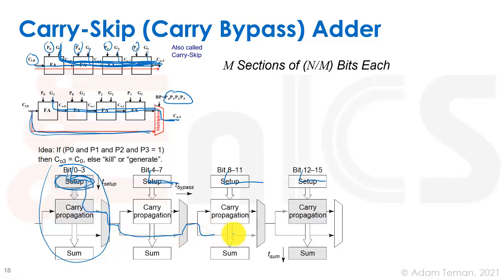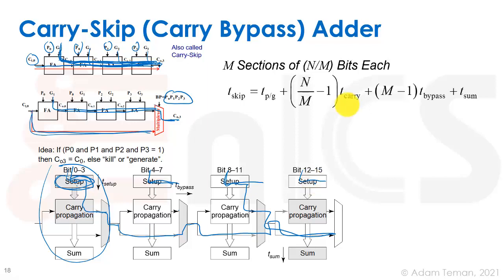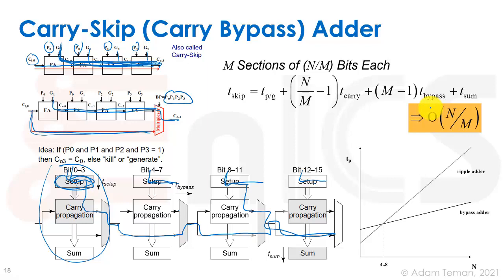The worst case is going through the propagate of each section sequentially, but by parallelizing those worst-case patterns across sections we get a large speed-up. With m sections each of n/m bits, we get something like O(n/m) carry delays and m bypass delays, which is much faster than a ripple carry adder. The bypass adder has a much smaller slope than the linear increase of the ripple carry adder as n grows.